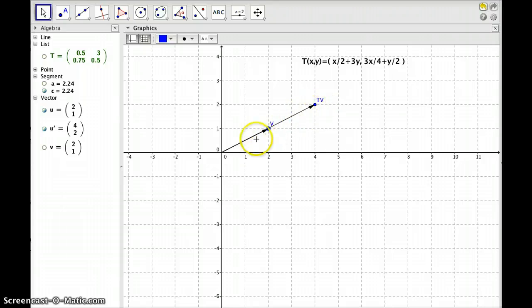I get another vector that is double it. What this shows is that this vector right here, 2, 1, is an eigenvector, and the associated eigenvalue is 2, because what the transformation does to this vector is it doubles it.